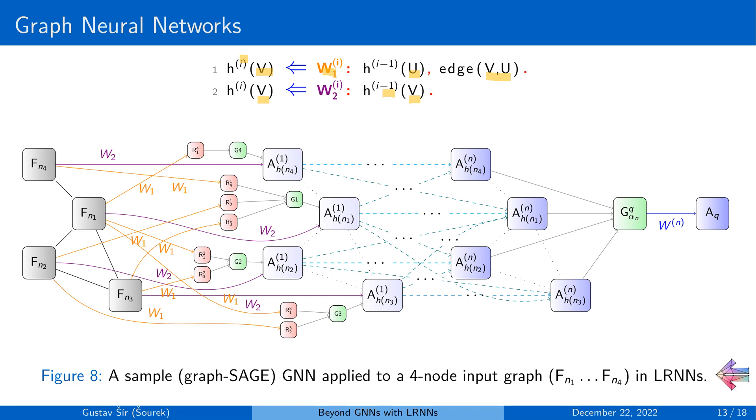And now this logical template, basically directly encoding the Weisfeiler-Lehman-based propagation rule, also called message passing in GNNs, will automatically induce the exact same computation graph you would get with those classic GNNs when written procedurally in the classic deep learning frameworks.